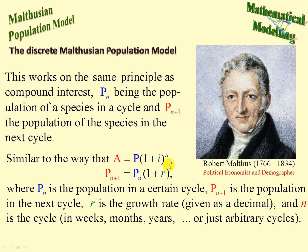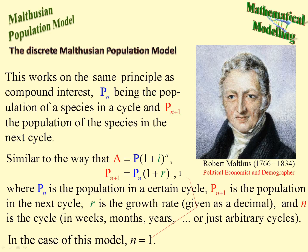Here is the compound interest formula, and here is Robert Malthus' formula, where Pn+1, the next cycle's population — similar to the amount — is equal to the previous population, the present population, which is like the principal, times (1 + R), where R is the rate of increase. And because it's discrete, it's only for a single cycle at a time.